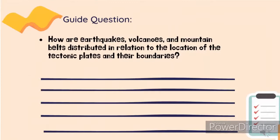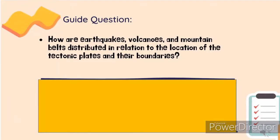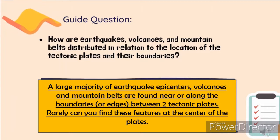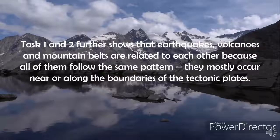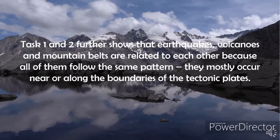A guide question from last time asked: how are earthquakes, volcanoes, and mountain belts distributed in relation to the location of tectonic plates and their boundaries? The answer is that a large majority of earthquake epicenters, volcanoes, and mountain belts are found near or along the boundaries or edges between two tectonic plates. Rarely can you find these features at the center of the plates. Tasks 1 and 2 further show that earthquakes, volcanoes, and mountain belts are related to each other because all of them follow the same pattern — they mostly occur near or along the boundaries of tectonic plates.